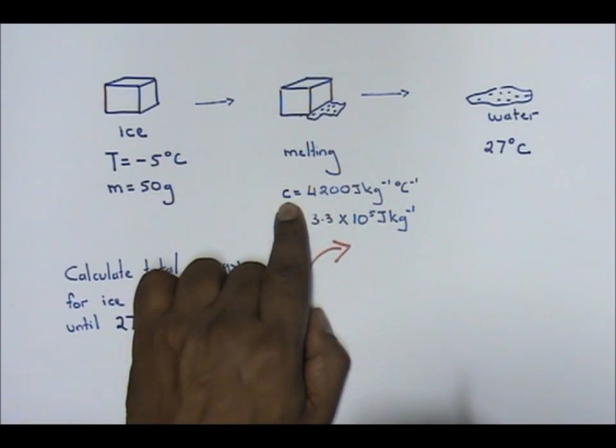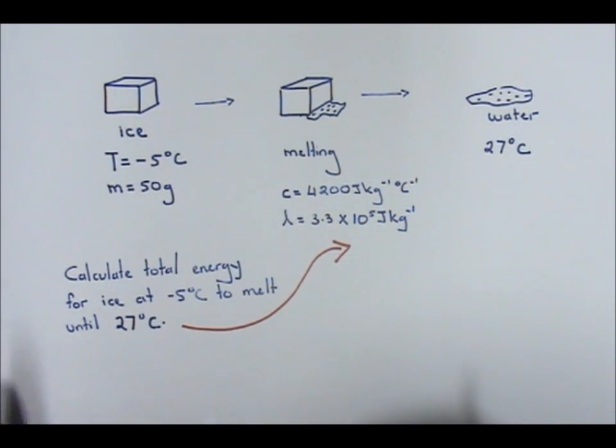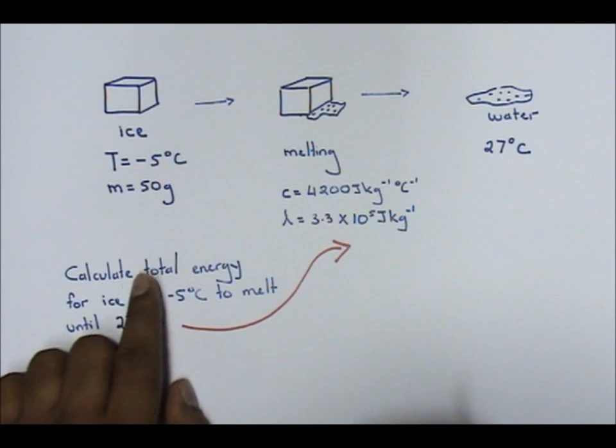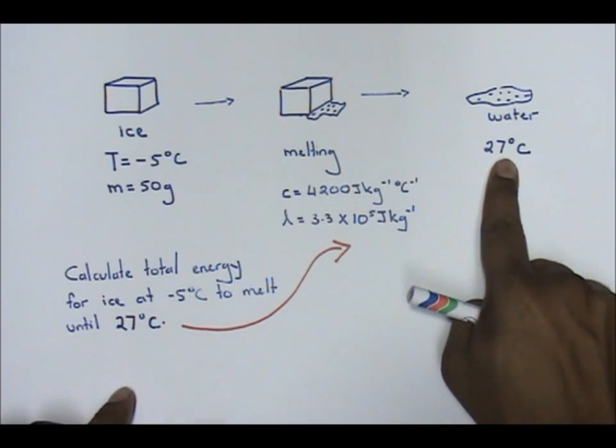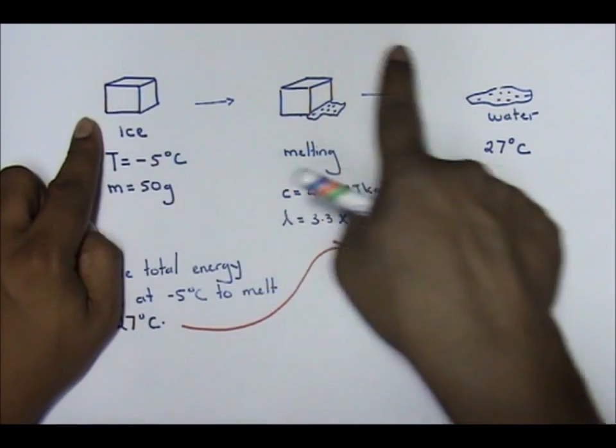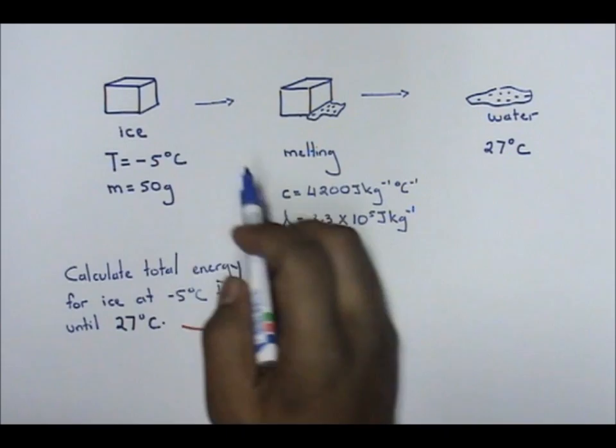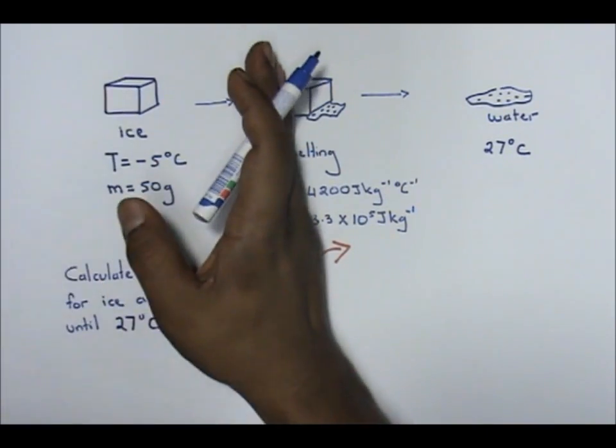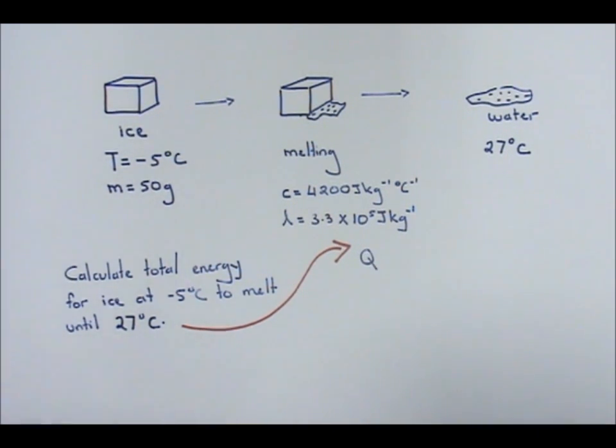Specific heat capacity given to you 4200, latent heat is given to you as 3.3. The question is: calculate total energy for ice at negative 5 to become 27 degrees Celsius. That means total energy from here to here, how much energy is being absorbed. Very importantly, you have three calculations involved. Let's do it step by step.